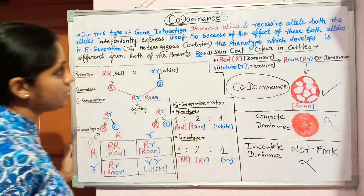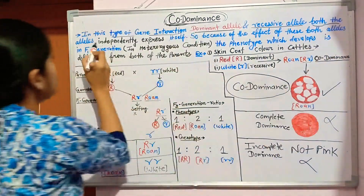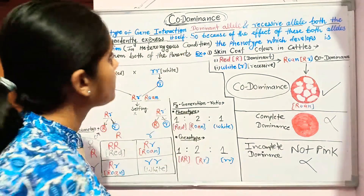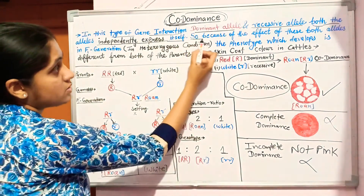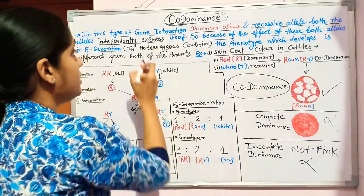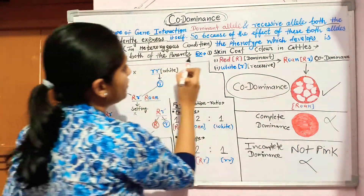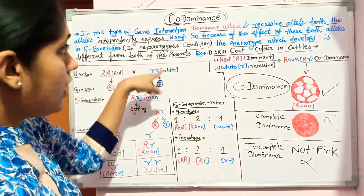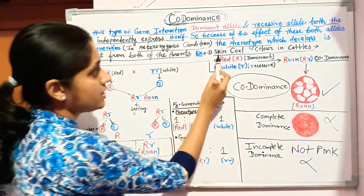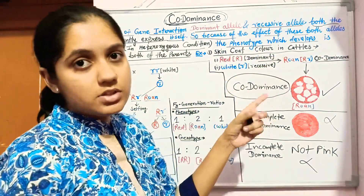The definition of co-dominance is: in this type of gene interaction, the dominant allele and the recessive allele both independently express themselves. Because of the effect of both alleles in the F1 generation in heterozygous condition, the phenotype that develops is different from both parents. We can understand this definition through the example of skin coat color in cattle.